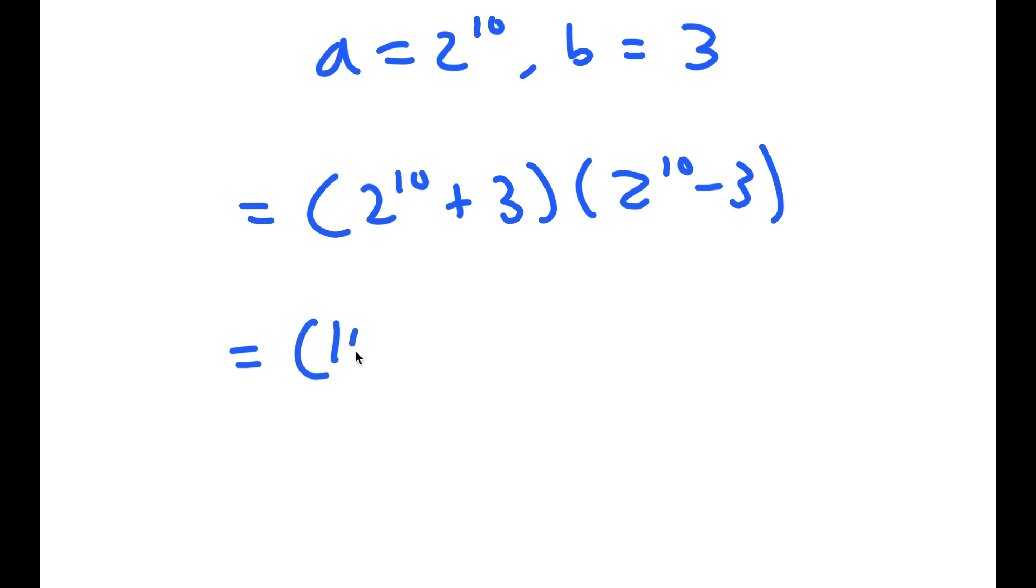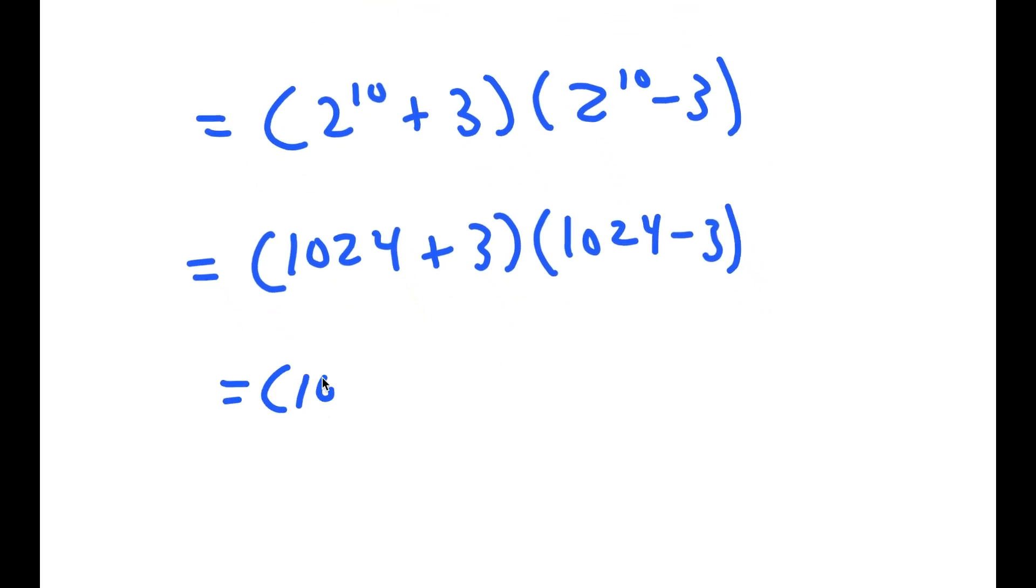Now, 2 to the power of 10 is equal to 1024. So I get 1024 plus 3 times 1024 minus 3, which is equal to 1027 times 1021.